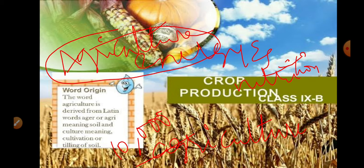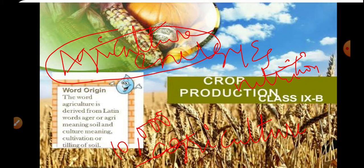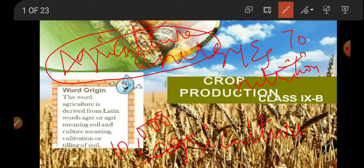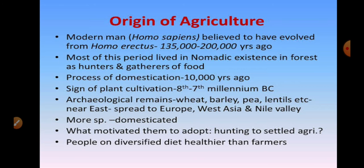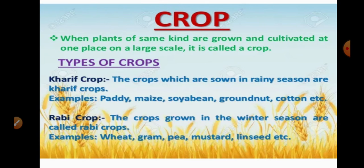Even today, different research works are ongoing for better crops and higher yields. In India, during the 1960s, the Green Revolution started, where efforts were made to produce a lot more rice. Still, 70% of Indian people truly depend on the agricultural industry. Now let us look at the different types of crops.